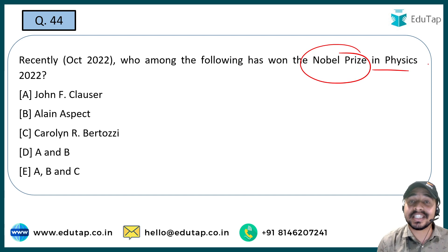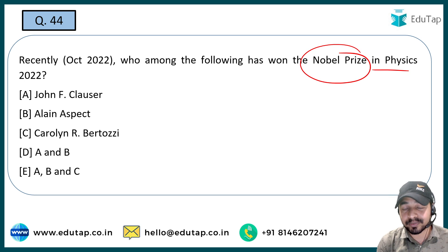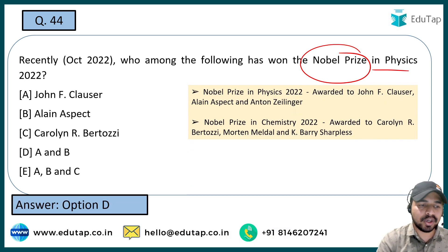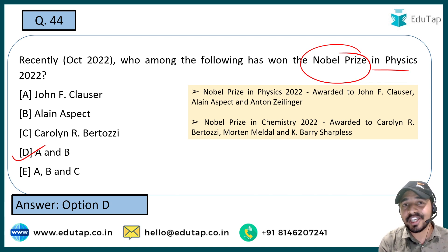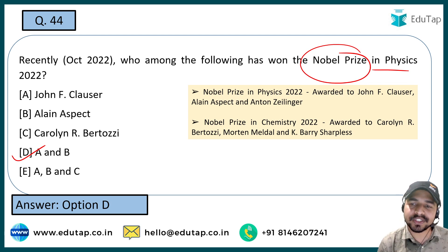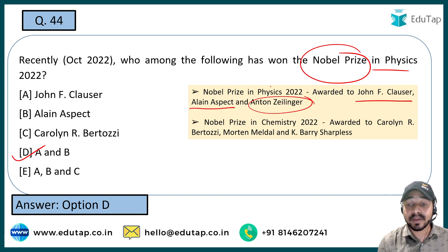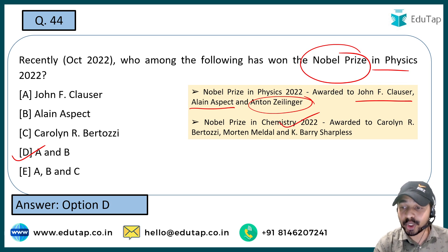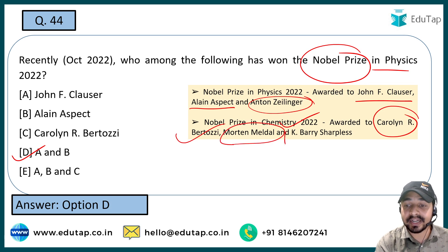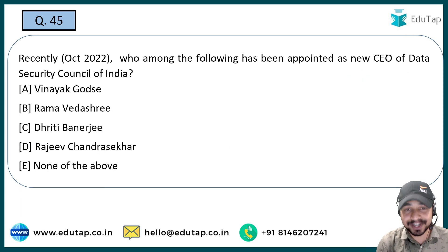The next question: Nobel Prize in Physics — who received it for the year 2022? Nobel Prizes are really very important from the exam point of view. The right answer is both Option A and B. Nobel Prize in Physics 2022 was awarded to John F. Clauser, Alain Aspect, and Anton Zeilinger. Nobel Prize in Chemistry 2022 was awarded to Carolyn R. Bertozzi, Morten Meldal, and K. Barry Sharpless.